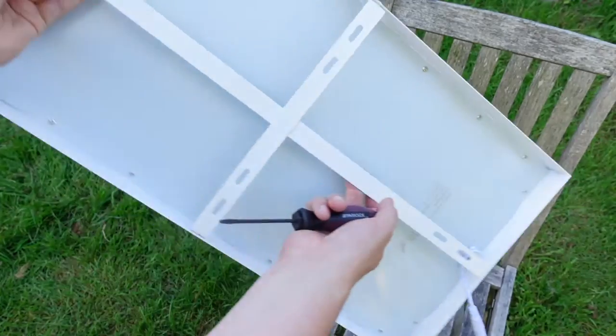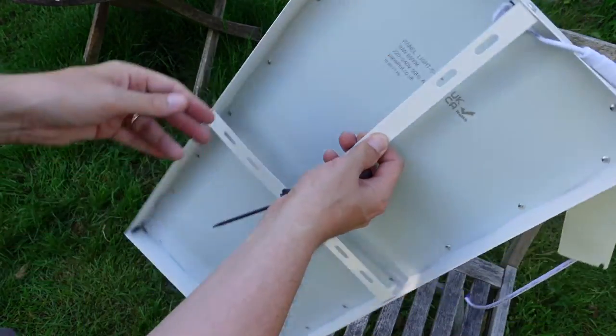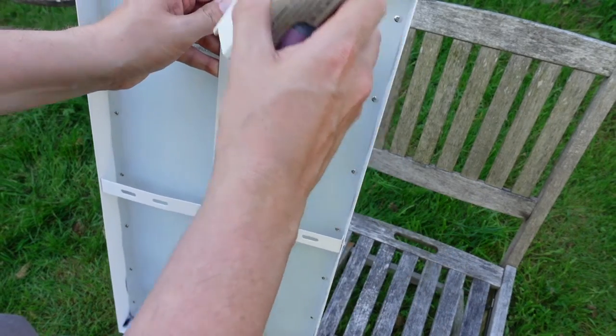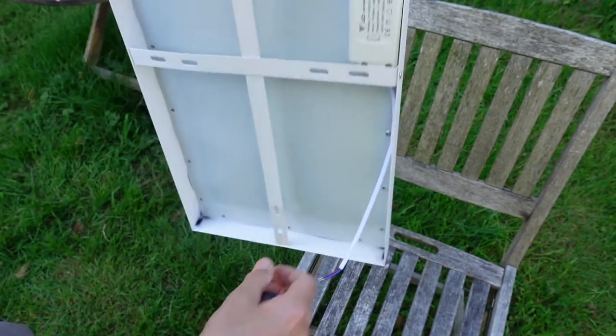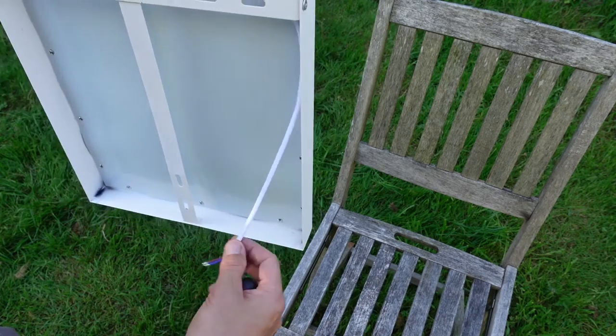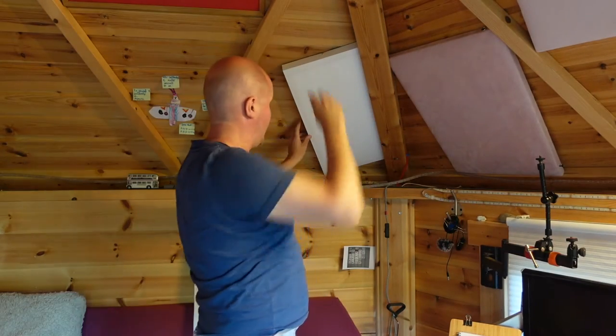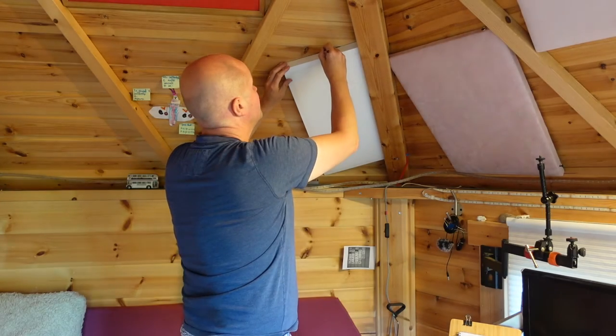So now I've got this cross brace screwed in behind the frame and then this transformer, I'm going to just clip it on the back. I think I'm going to have to drill a hole in the corner to run a cable in to power it. I'm going to put this over here. I'll mark up where I want the dual lock tape to go. This stuff is brilliant, it's called dual lock tape.